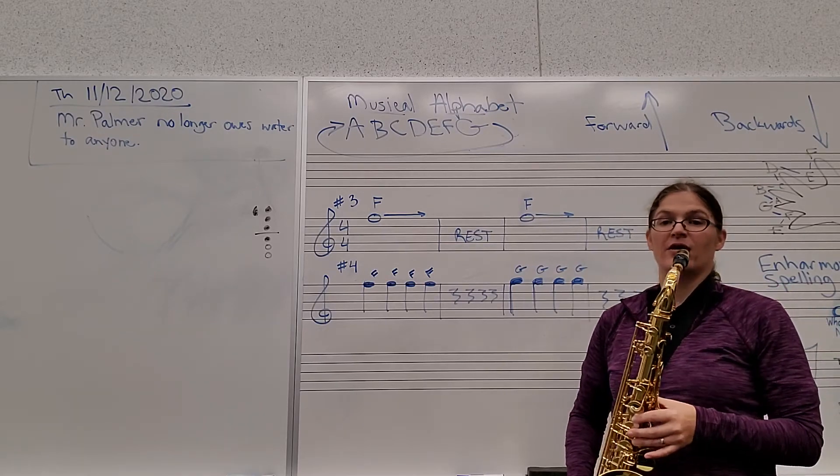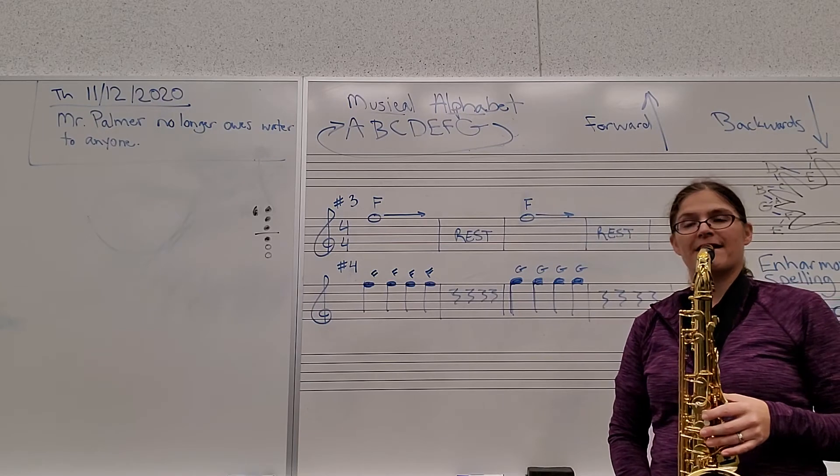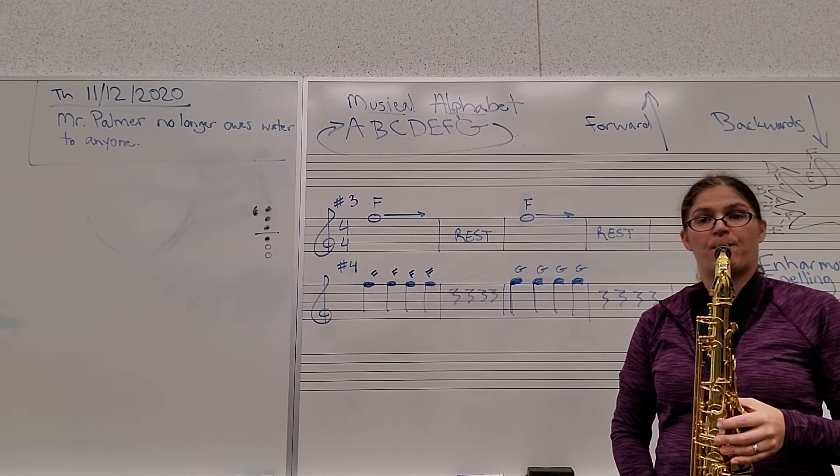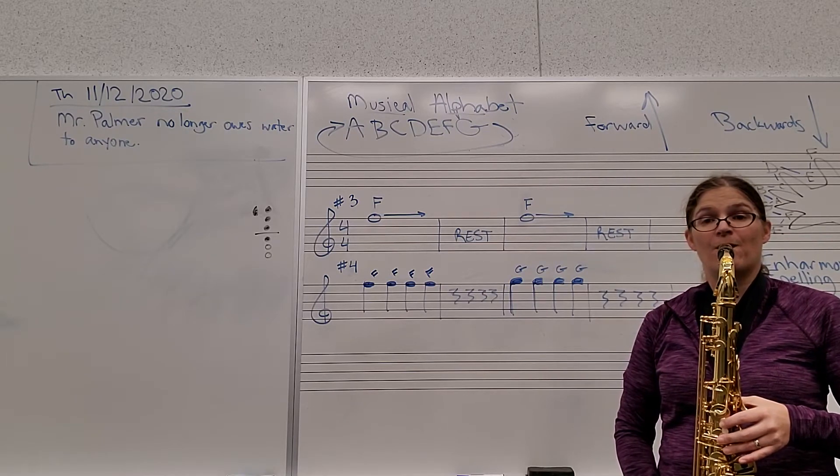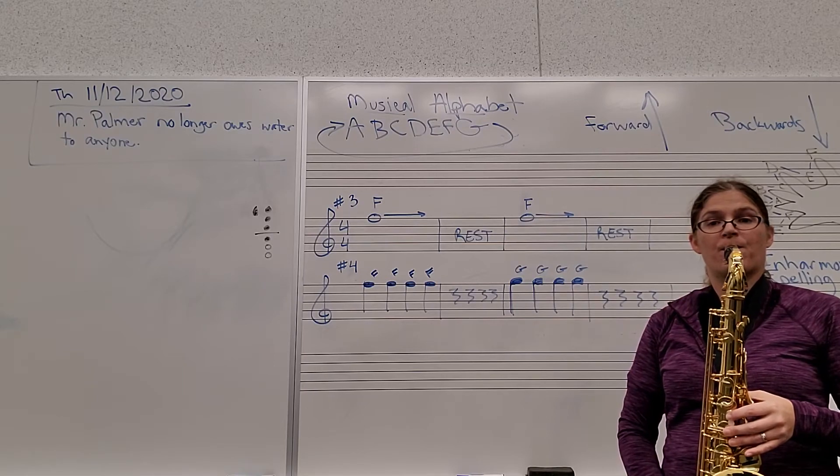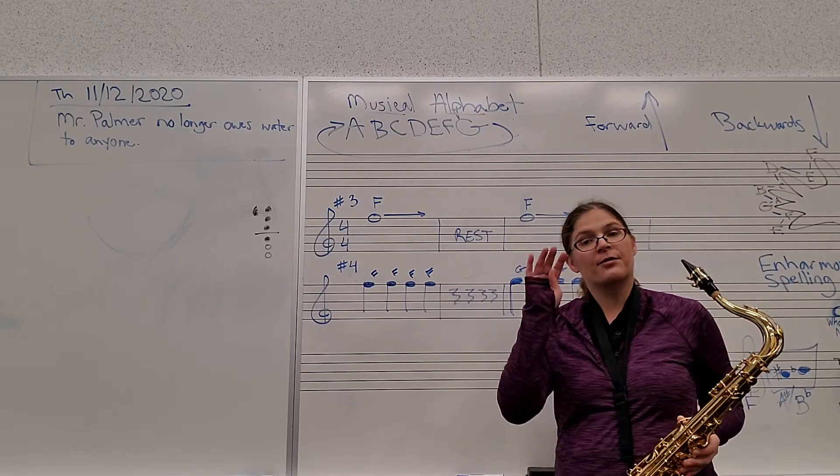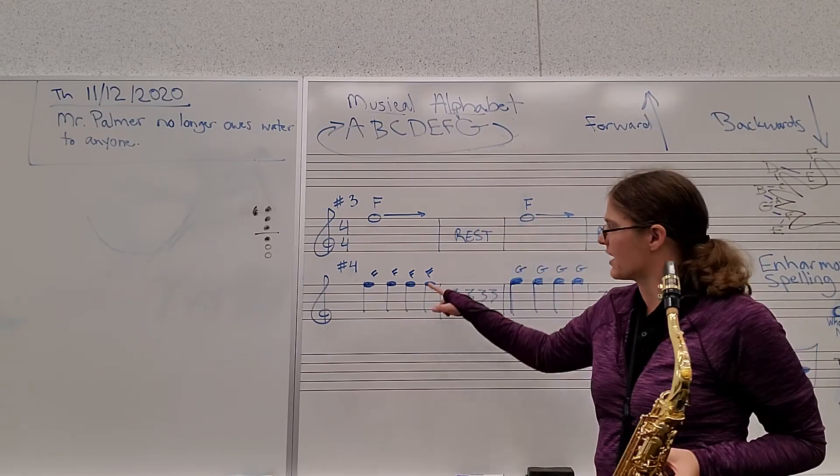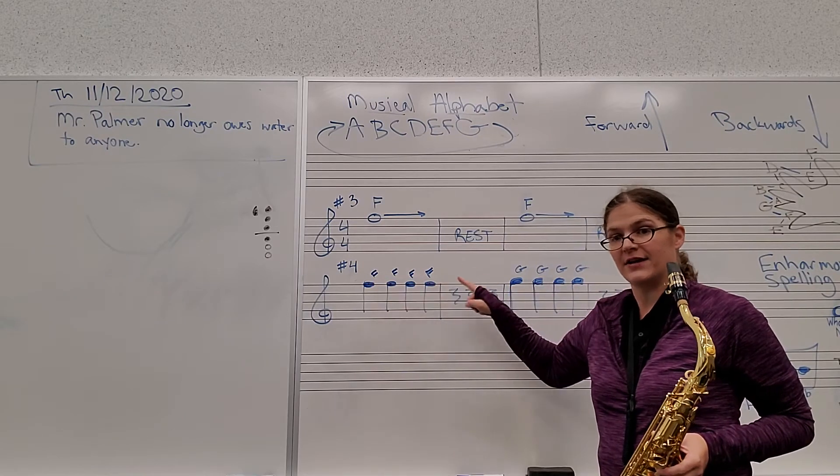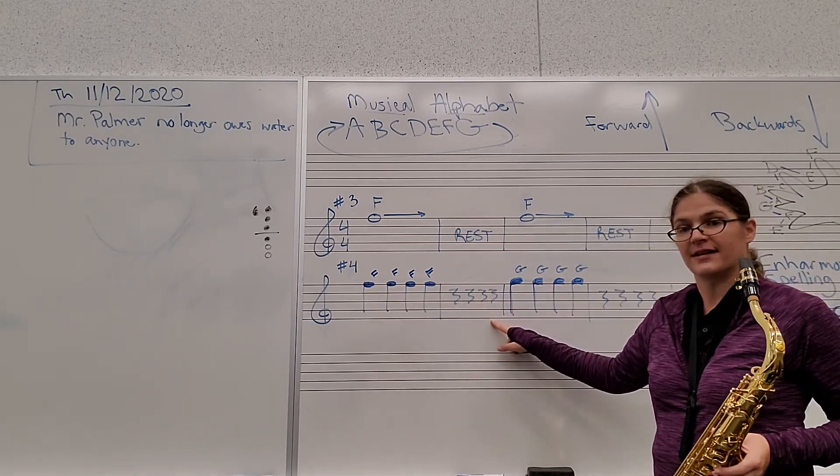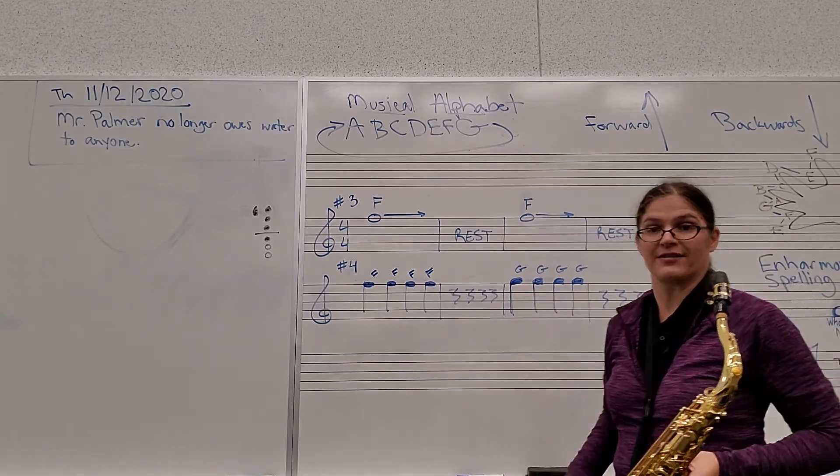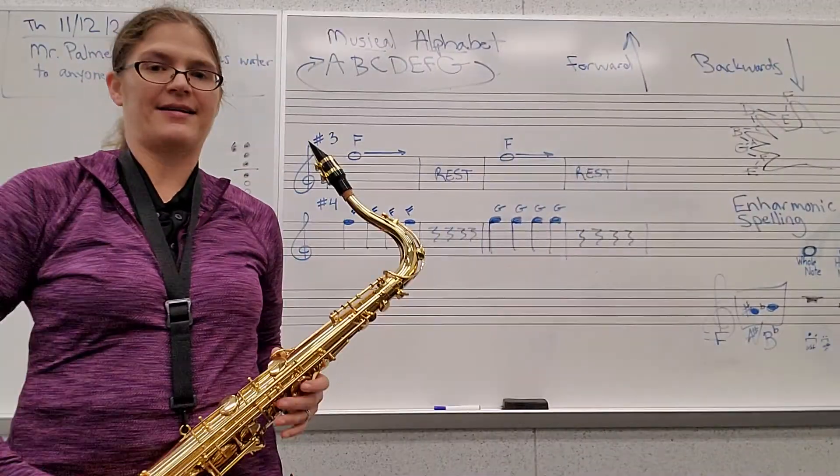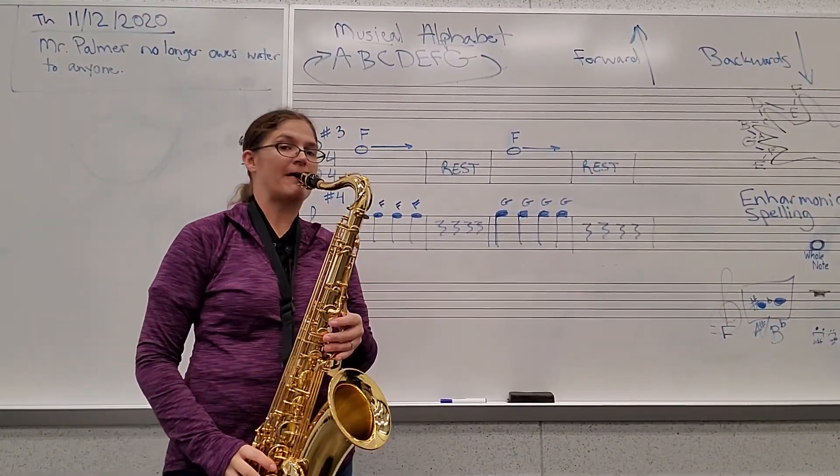Now let's play it. Use your tongue to tap each note. One, two, ready, go. Make sure you're playing four F's and then four G's. Put your eyes on the note heads of each note. Make sure that when you're resting, you're changing your fingers to the next note. Let's do it again, and I'm going to try to lower my camera so you can see both my top hand and my bottom. One and two and ready.